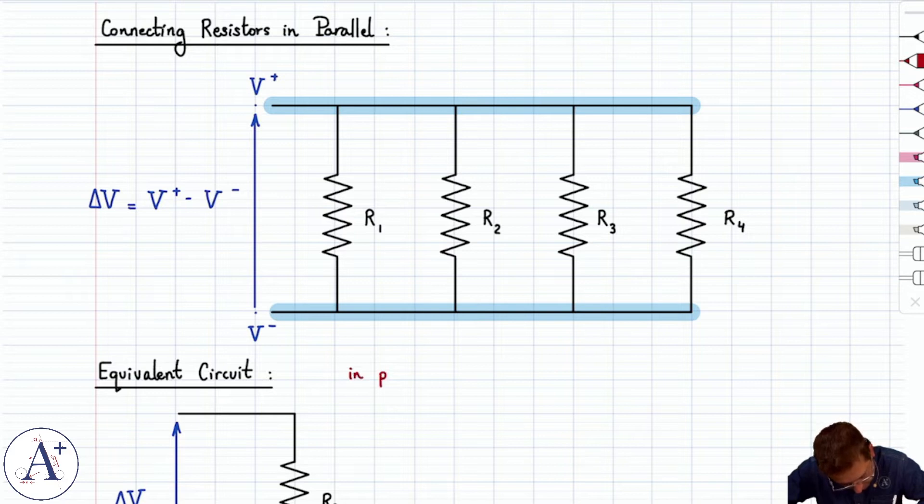These resistors are in parallel because they all see the same voltage. V1 is V2 is V3 is V4 is delta V.